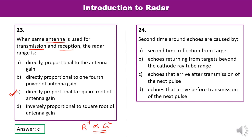Question 24: Second time around echoes are caused by what? A second time around echo is one which arrives after the transmission of the next pulse. That is the correct answer.